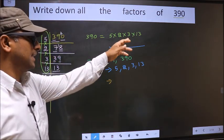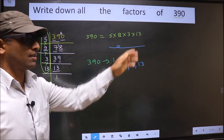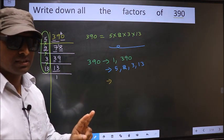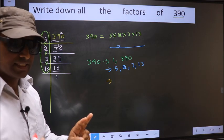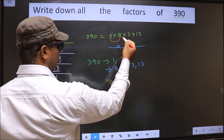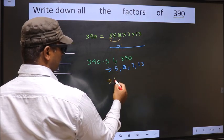Next. From these numbers, now you select a combination of 2 numbers. How do we do that? See. First, I fix 5. Combine with 2. 5 into 2, 10.